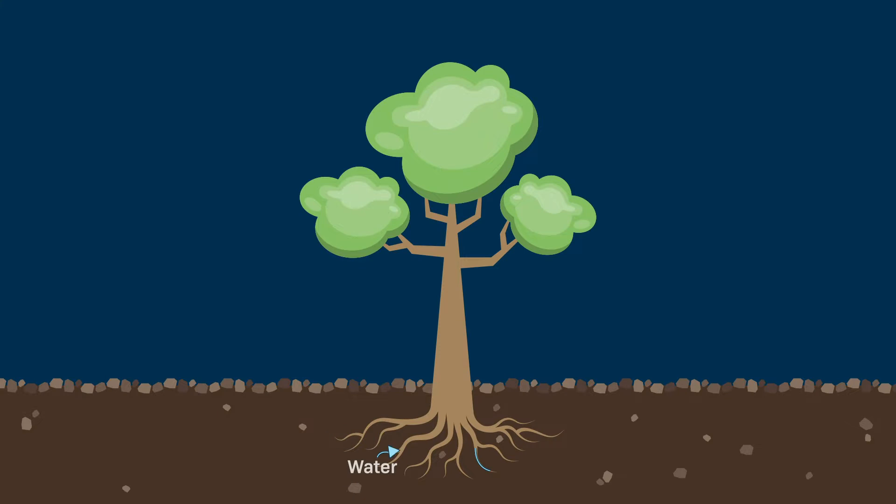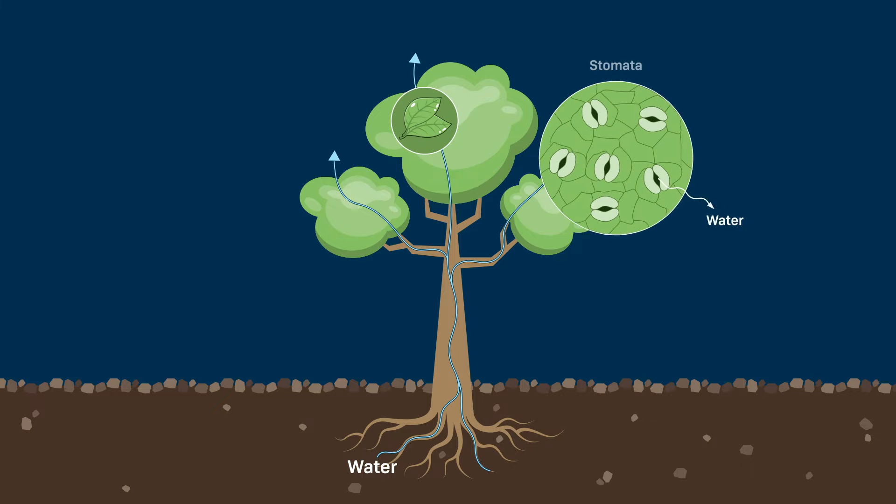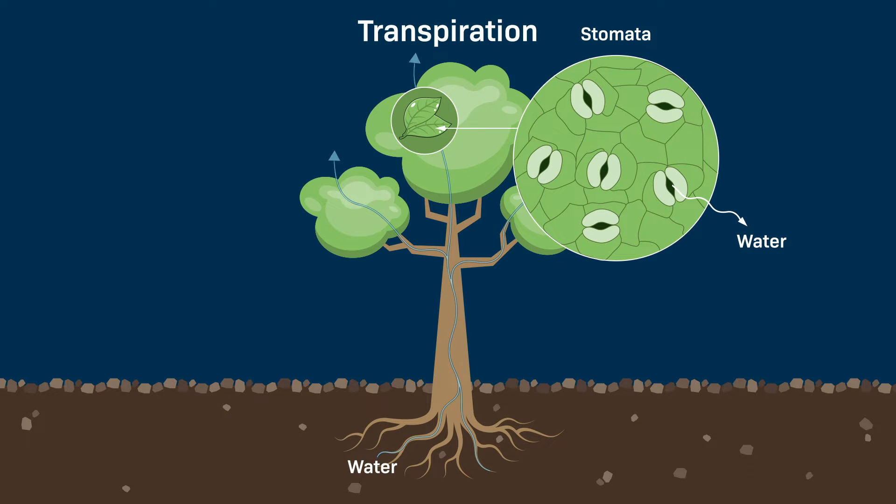Plants suck. Not as in they're the worst, they're just constantly sucking up water from the soil. Water enters plants through their roots, travels upward through pipe-like vascular cells called xylem, and exits the leaves through tiny pores called stomata in a process known as transpiration.